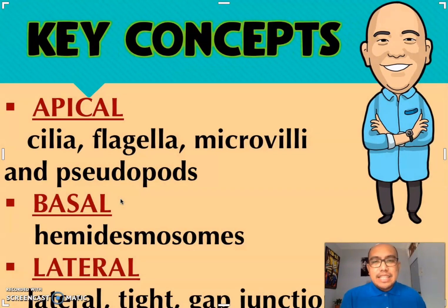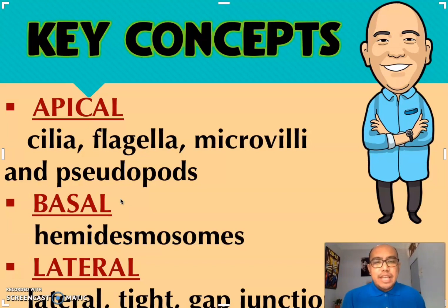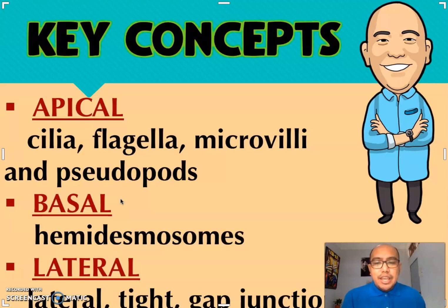Let's now have our key concepts. Again, we have three types of modification: apical, basal, and lateral modification. Under apical, we have cilia, flagella, microvilli, and pseudopods. Under basal modification, we have hemidesmosomes. And for lateral modification, we have tight junctions, adhering junctions, and gap junctions.